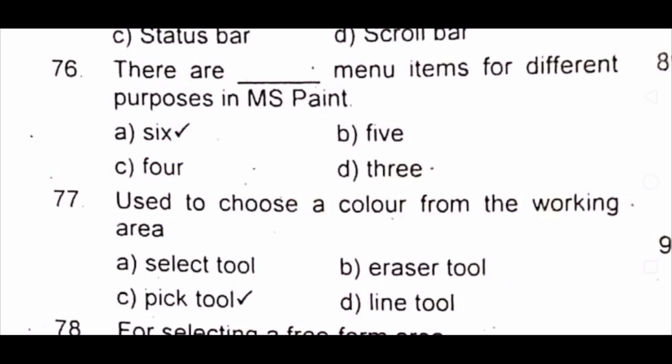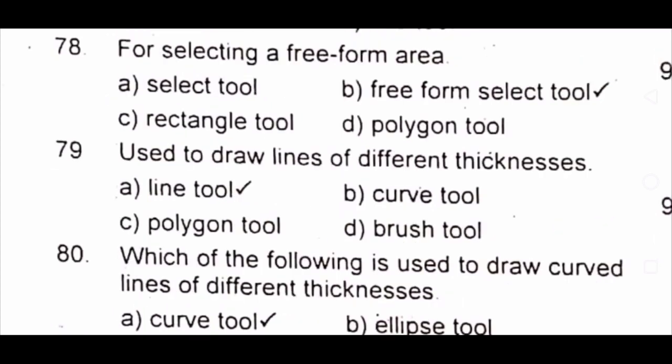Question 76: There are dash menu items for different purposes in MS Paint. A) 6 B) 5 C) 4 D) 3. The answer is A) 6. Question 77: Use to choose a color from the working area. A) select tool B) eraser tool C) pick tool D) line tool. The answer is C) pick tool. Question 78: For selecting a free form area. A) select tool B) free form select tool C) rectangle tool D) polygon tool.